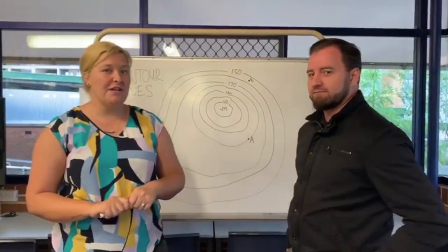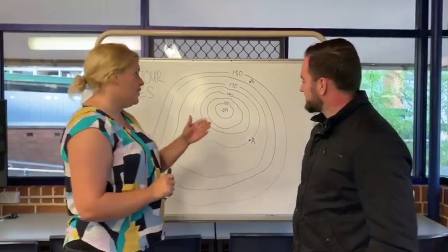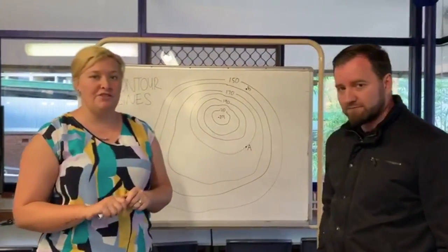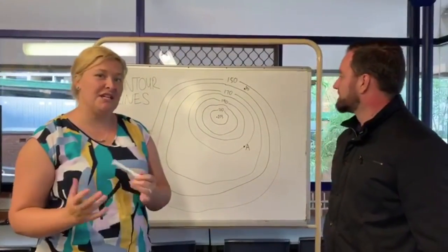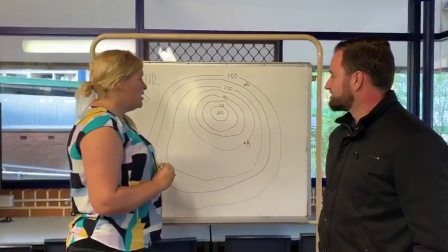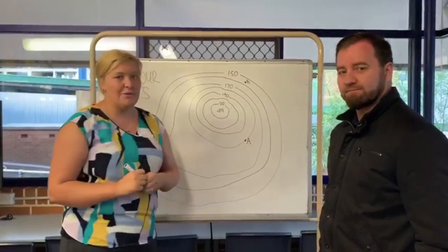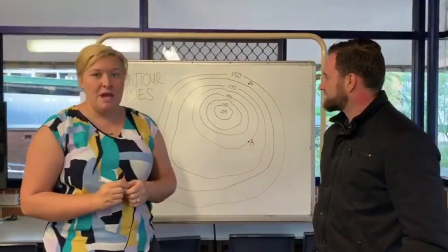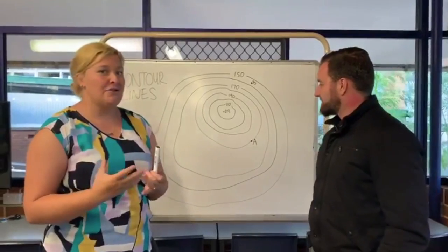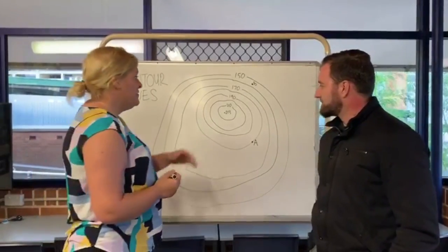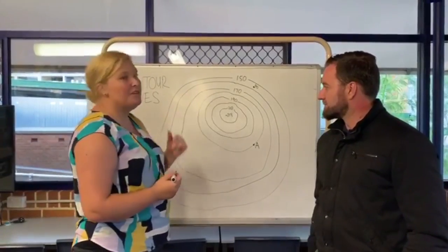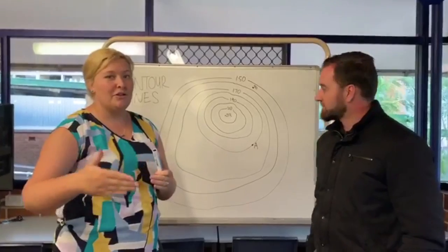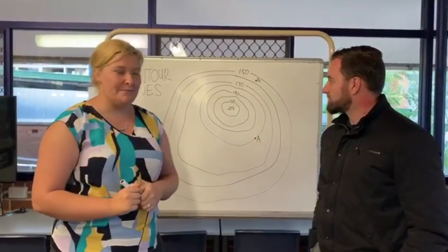What we're going to show you now is how to actually find the height of a place when looking at a contour map. This is a really common question you'll get in the HSC and in all of your geography tests. The best thing to do when looking at a contour map is to work out the contour interval — all that is is the difference between each contour line, and it's always going to be the same amount, going up by the same number of meters each time.